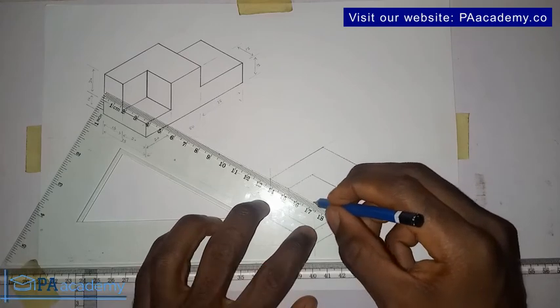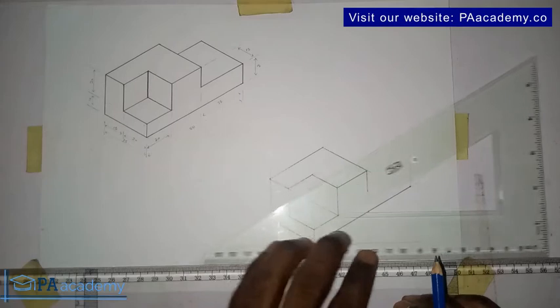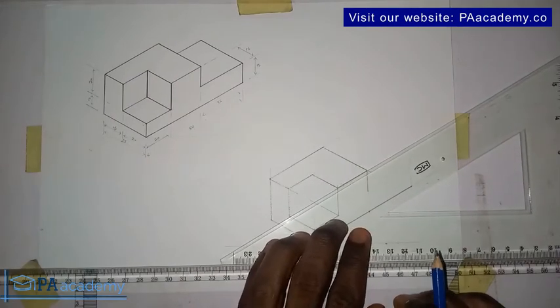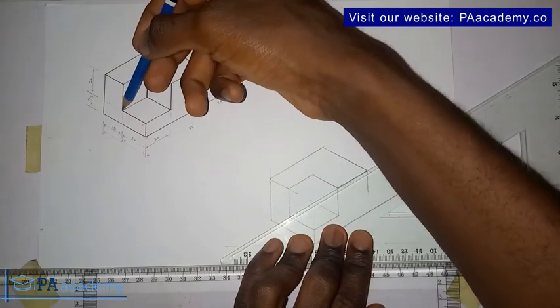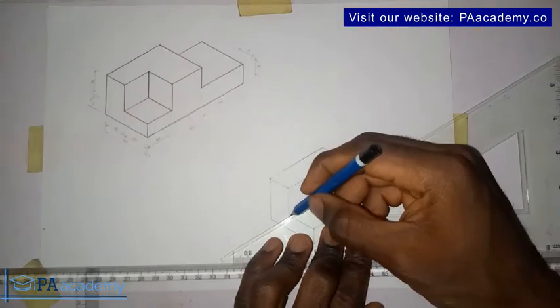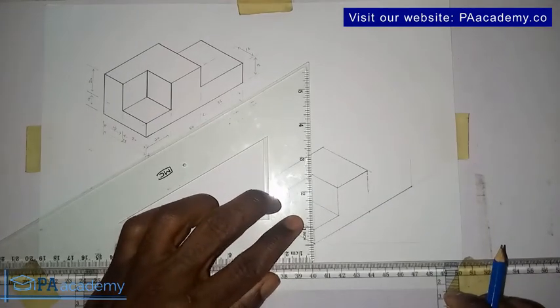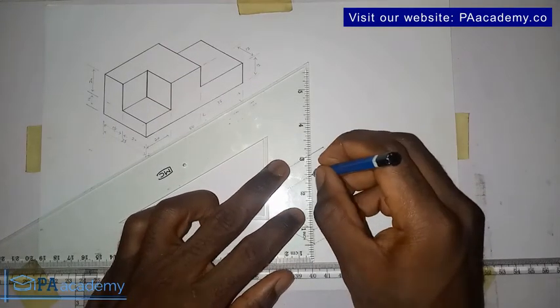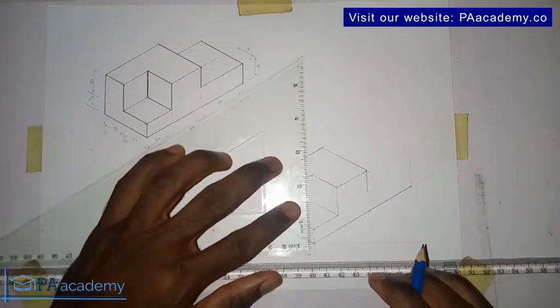So from this point here is the same thing like from this point here, to touch this line. And from their point of intersection, you can see already have that. So let me just make it, let me just use a thick line.